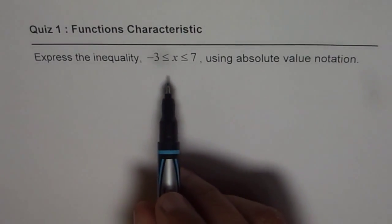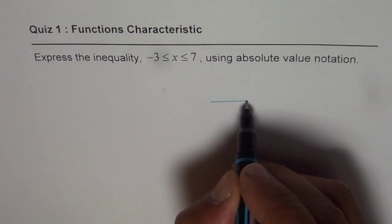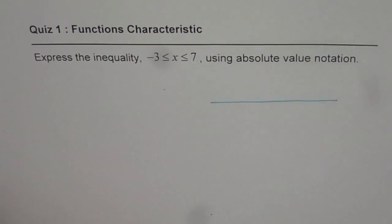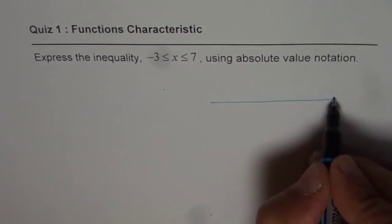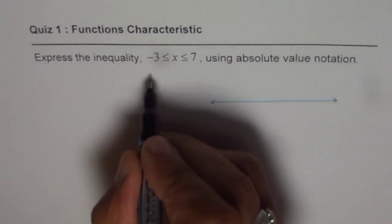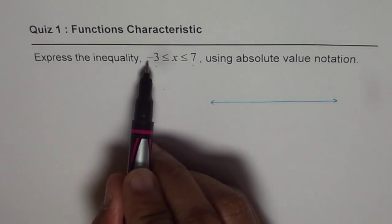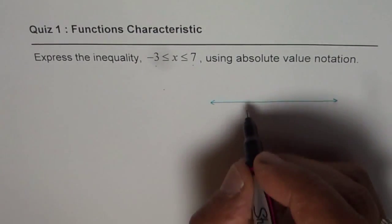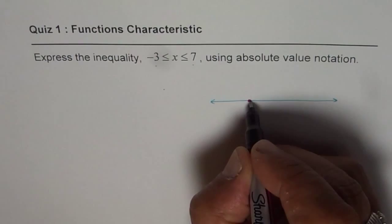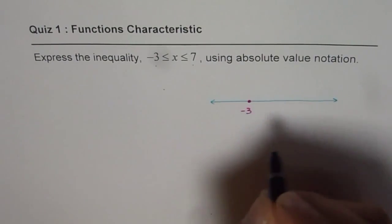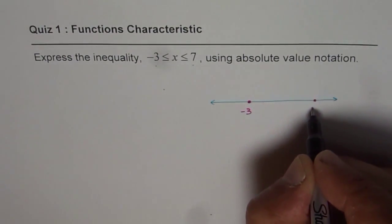Let's see how to write such an interval in the form of an absolute function. Normally, you will see these two values to be exactly the same, so it becomes much simpler. Here we have two values which are not the same: -3 and 7. Both are included, so we'll put -3 here and this is 7.